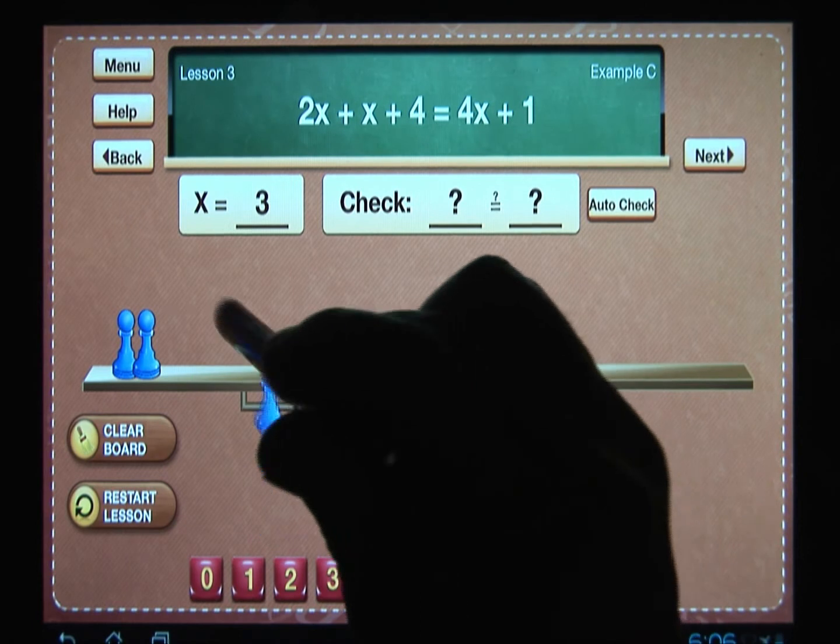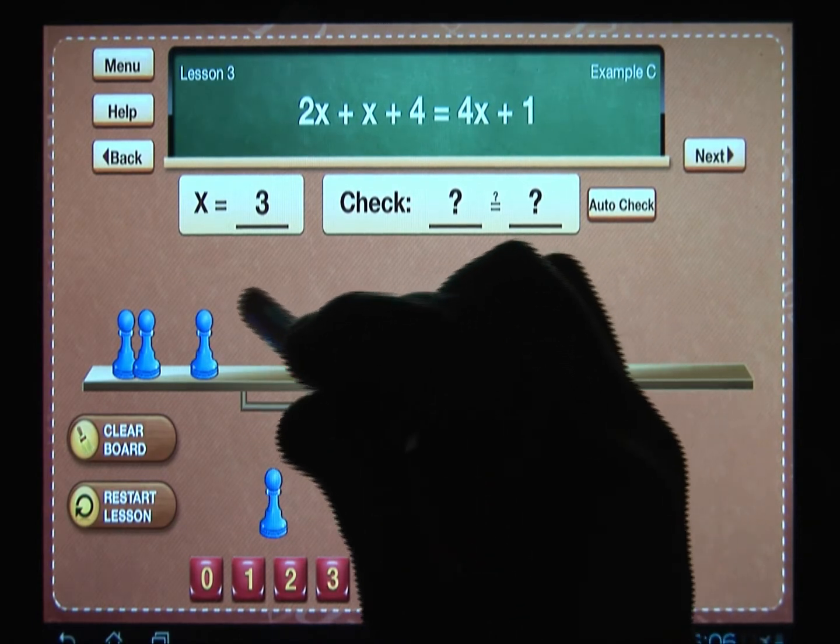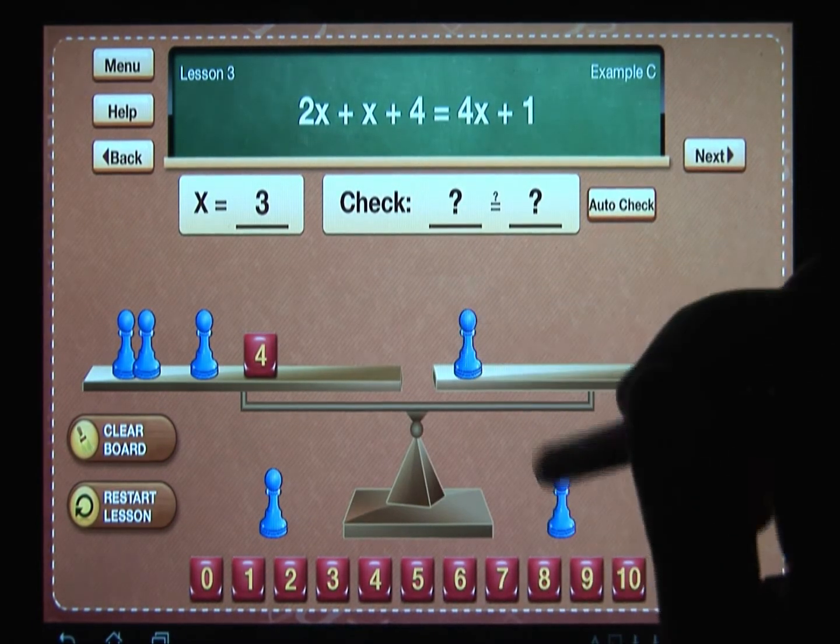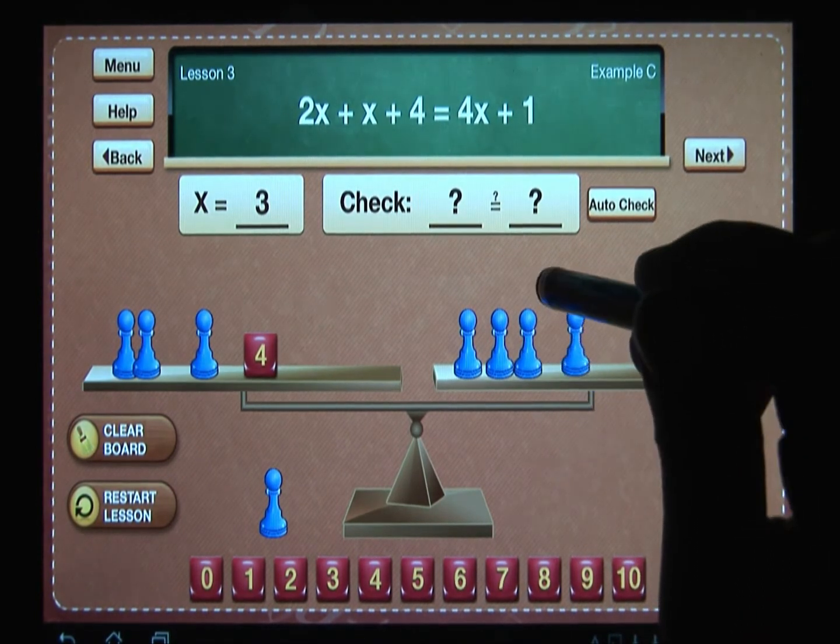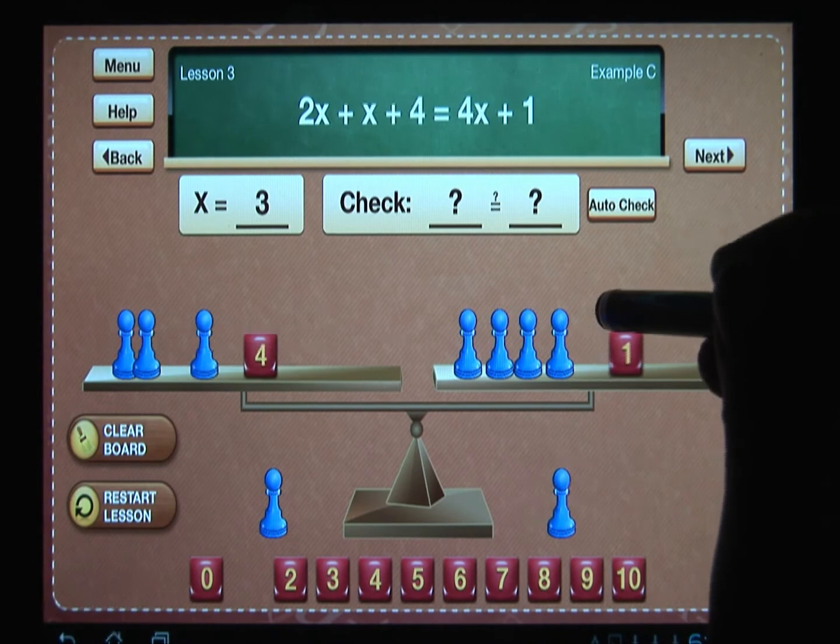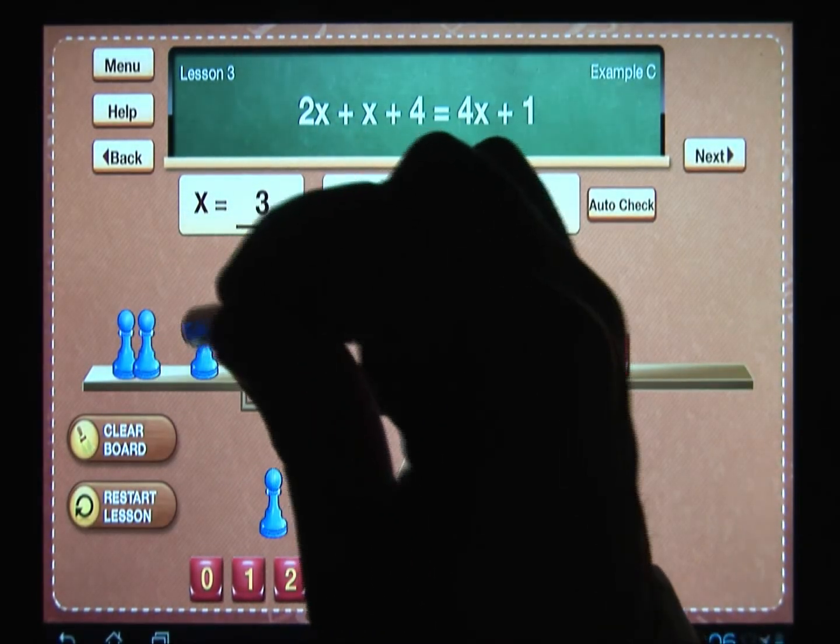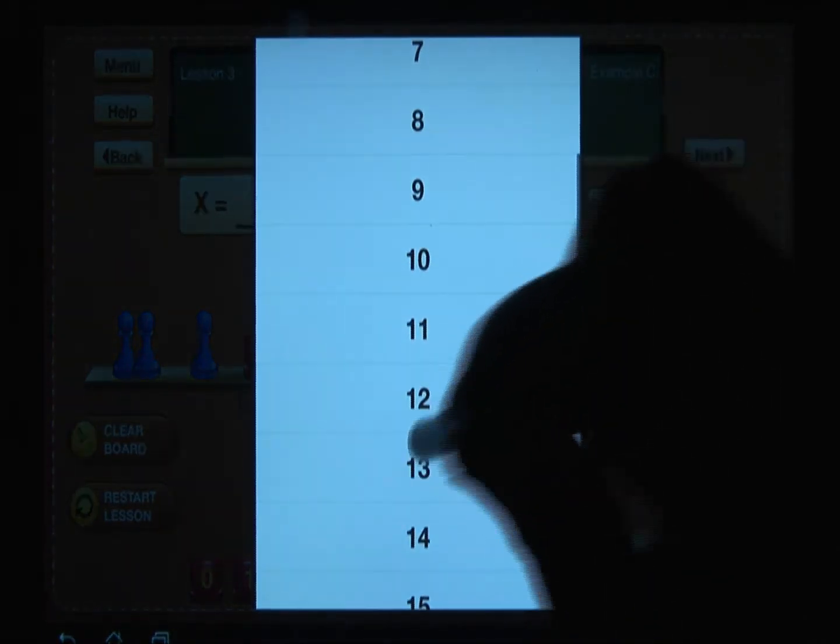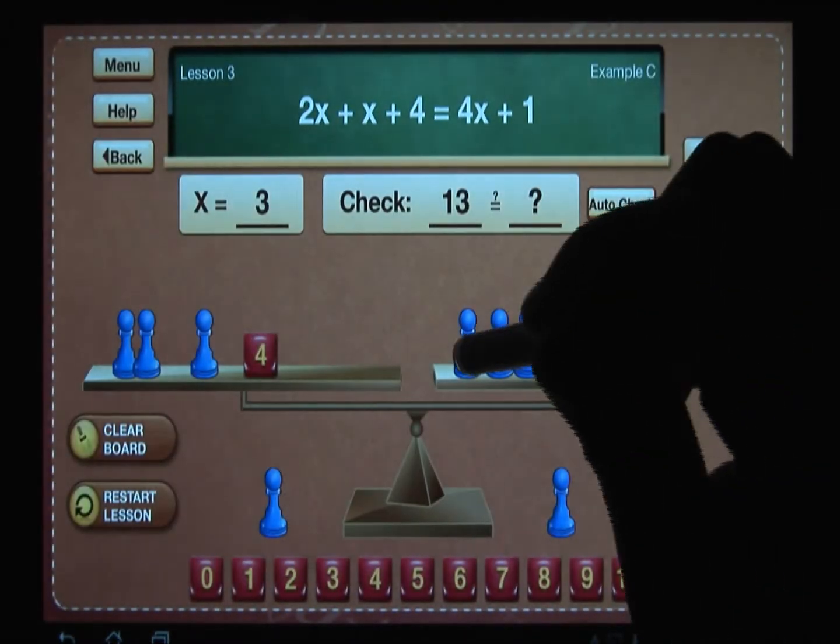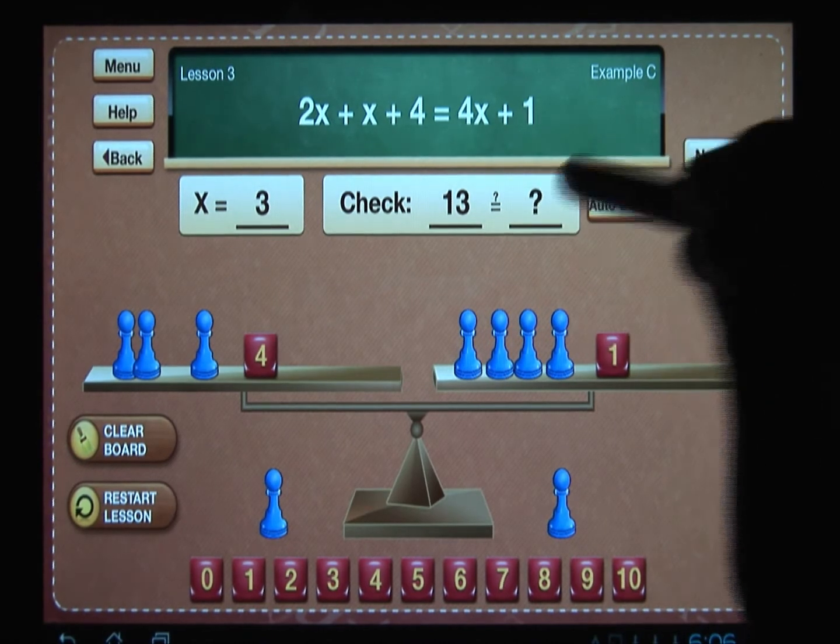I have 2x + x + 4 = 4x + 1. And now if each x is 3, I have 3, 6, 9, and 4 is 13. And on the right side I have 3, 6, 9, 12, and 1 is 13. And we get the great pop-up and that is correct.